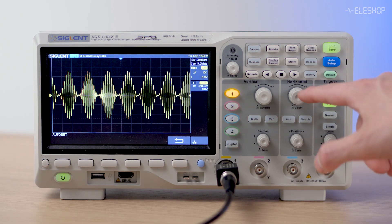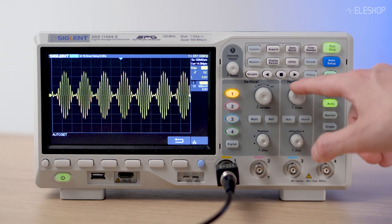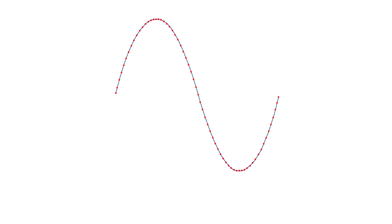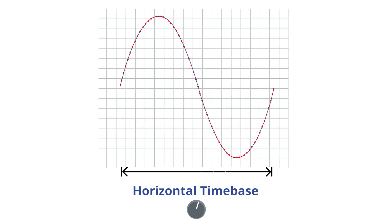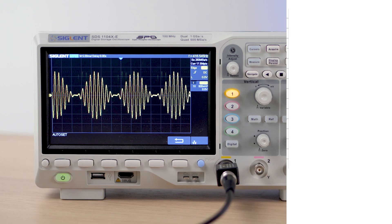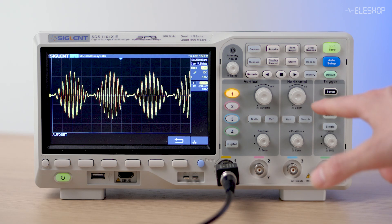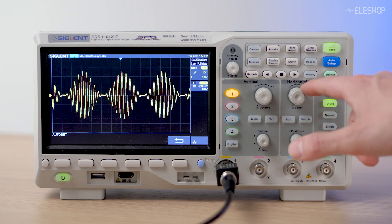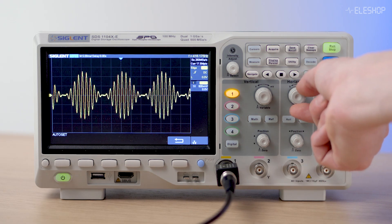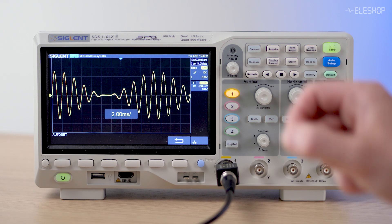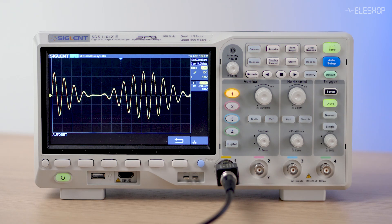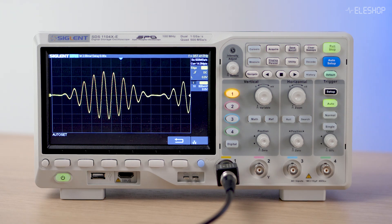Next, set the horizontal scale — time per division. This controls how much time each square represents. Use microseconds or milliseconds depending on your signal. Faster signals need smaller time values, slower signals need larger ones. This helps stretch or compress the signal in time.